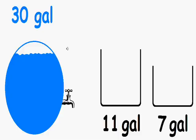Alright, so welcome back and let's get started with the solution to this problem. The first thing we are going to do is we are going to take water from the 30 gallon tank and we are going to fill the 11 gallon container.